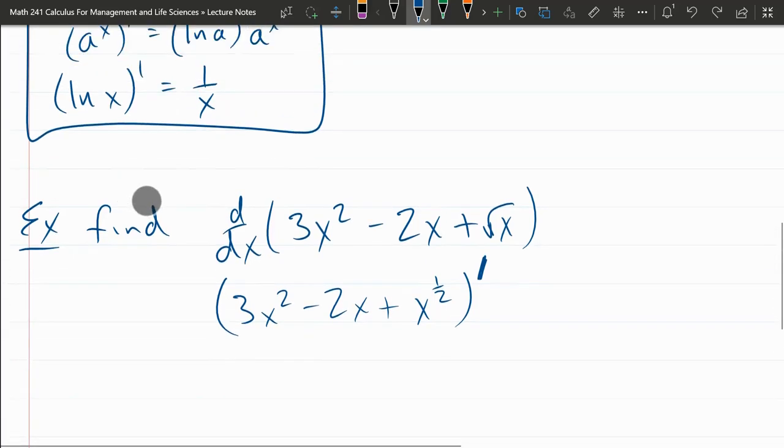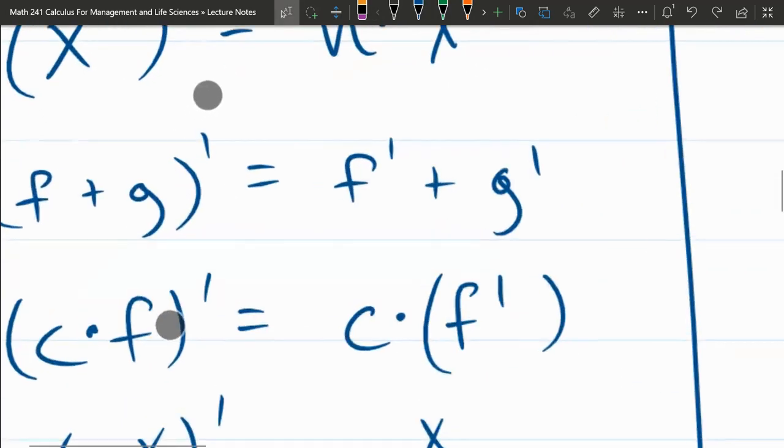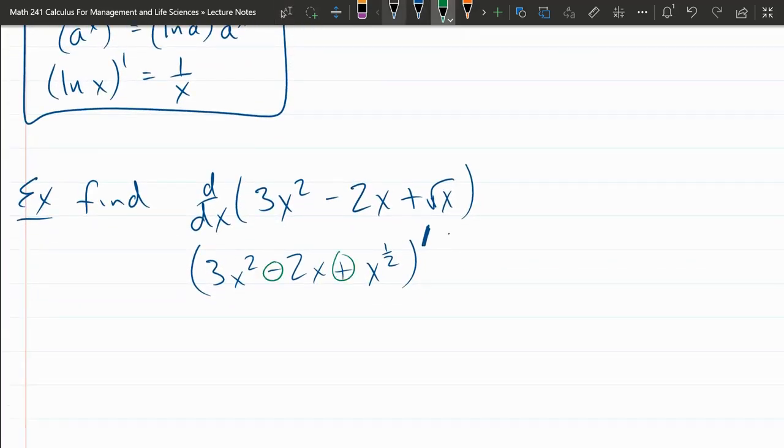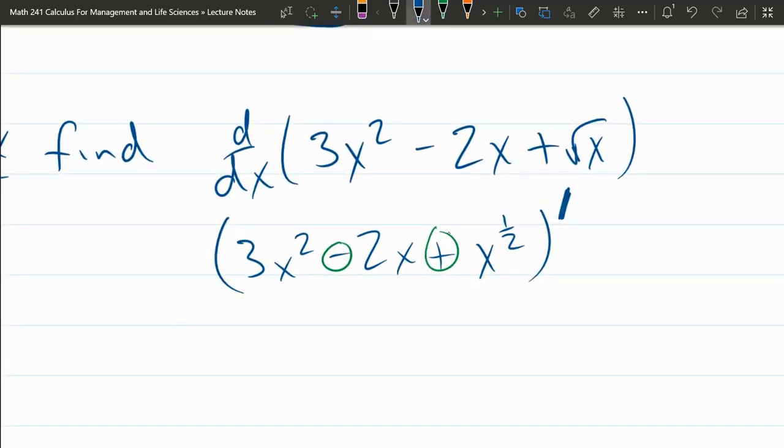All right, first rule we're going to use, sum rule. It's also true for the difference. So the derivative of two functions added together, you can just take their derivative separately and add them together. This is also true if they are subtracted. So we're going to use that rule now. And we have three things added and subtracted here. So I get to take the derivative and individually apply it to the terms, 3x squared prime minus 2x prime plus x to the one half prime. It is important that these parentheses are here because this derivative applies to this entire thing right here, not just the x squared.